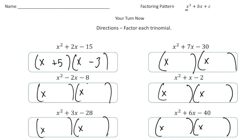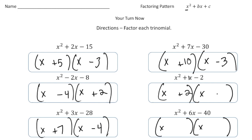Here, we need what times what gives us a negative 8, but adds up to negative 2 — so that would be a minus 4, plus 2. For negative 28, what times what gives us negative 28, but adds up to 3? That would be plus 7 and then minus 4. What times what gives us negative 30, but adds up to 7? That would be a plus 10 and minus 3. What times what gives us negative 2, but adds up to 1? That would be a plus 2 and a minus 1. And finally, for x squared plus 6x take away 40, what times what gives us negative 40, but adds up to 6? That would be a plus 10 and a minus 4, and there it is.